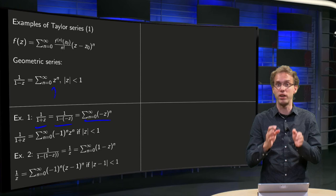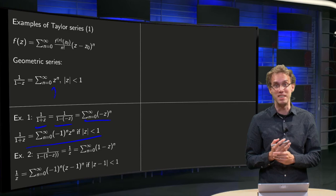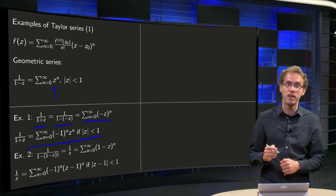Which can be simplified: (-z)^n equals (-1)^n times z^n. So there we are. If it converges if the norm of -z is smaller than 1, so it converges if |z| < 1. And we can do a similar trick if we substitute, for example, 1-z on the spot of z.